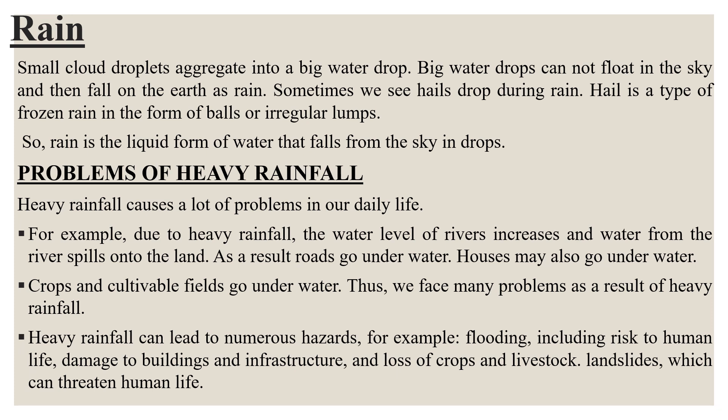So now we know what rain is. Sometimes we see hail drop during rain. Hail is a type of frozen rain in the form of balls or irregular lumps. Rain is the liquid form of water that falls from the sky in drops.